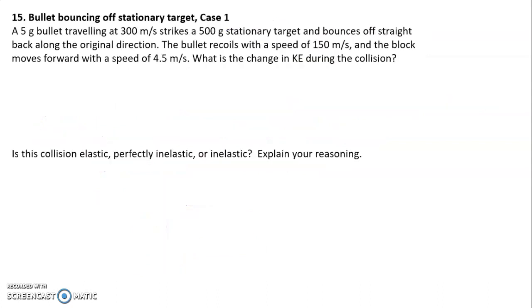On to the next one. We have a 5 gram bullet traveling at 300 meters per second, and it hits that same target. The target is stationary. This time, the bullet bounces off straight back along the original direction, and the bullet's going 150 meters per second after the collision. The block's moving forward now at 4.5 meters per second. And we did this problem previously as well.